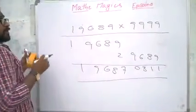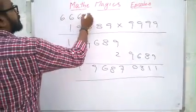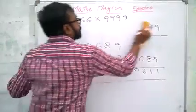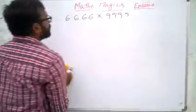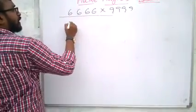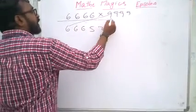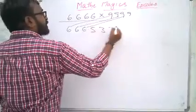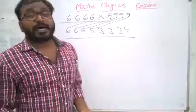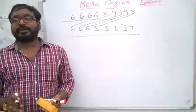Similarly, we are able to find products with repeated numbers. For example, 6666 into 999 — how do we calculate using this method? Subtract one from this number — it becomes 6665. Then do 9 minus 6 is 3, 9 minus 6 is 3, 9 minus 6 is 3, and finally 9 minus 5 is 4. So the answer is 6665334. We are able to solve such types of problems.